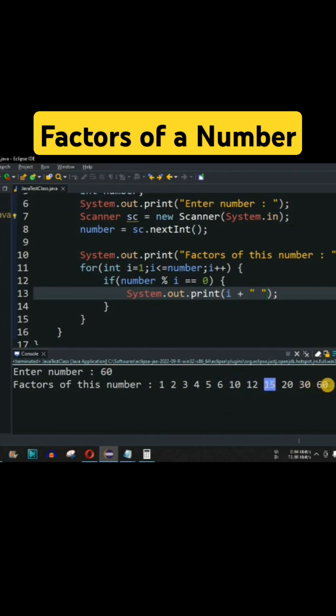Then we have 15, 20, 30, and then in the end 60, which can divide that number itself. So this is the very simple logic in order to find the factors of the number.